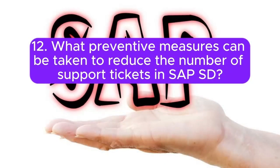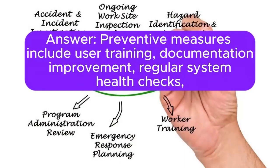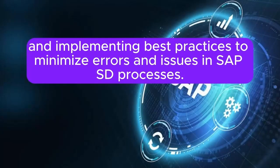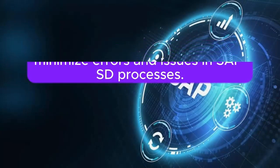Question 12: What preventive measures can be taken to reduce the number of support tickets in SAP SD? Answer: Preventive measures include user training, documentation improvement, regular system health checks, and implementing best practices to minimize errors and issues in SAP SD processes.